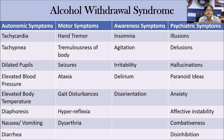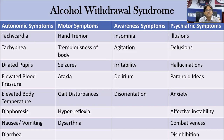Autonomic symptoms are generally seen mainly in the initial period of withdrawal, characterized by tachycardia, increased respiratory rate (tachypnea), dilation of pupils, increased blood pressure, elevated body temperature manifesting as fever, diaphoresis (profuse sweating), and GI autonomic arousal symptoms including nausea, vomiting, diarrhea, or a churning sensation in the abdomen.